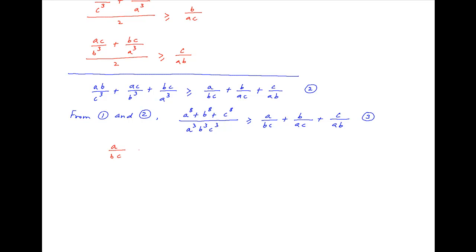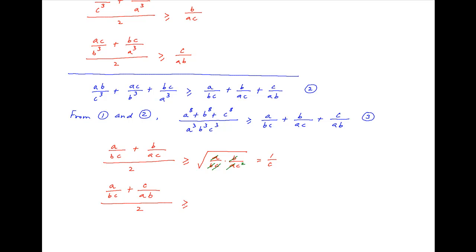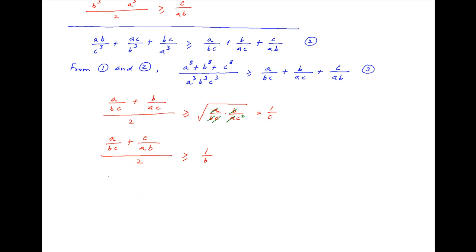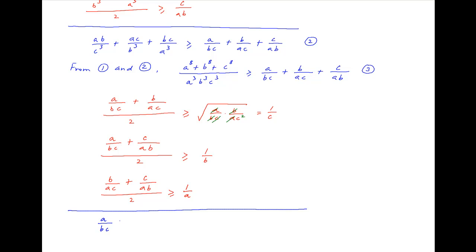Again, applying the AM-GM inequality: the arithmetic mean of a/bc and b/ac, which is the sum divided by 2, is greater than or equal to the geometric mean, which is the square root of their product. The right-hand side simplifies to 1/c. Similarly, a/bc plus c/ab divided by 2 is greater than or equal to 1/b. And finally, b/ac plus c/ab divided by 2 is greater than or equal to 1/a. Adding these three inequalities, a/bc + b/ac + c/ab is greater than or equal to 1/a + 1/b + 1/c. Let's call this Result 4.